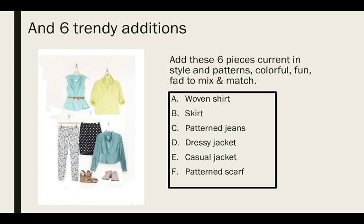Now, there's six trendy additions, and these are currently in style, colors and patterns. They're typically fun. They're a little bit more of a fad piece. You want to use them to mix and match. The eight pieces are classical. These are just what is trendy right now. So a woven shirt, skirt, patterned jeans, dressy jacket, casual jacket, a patterned scarf. So instead of a patterned scarf, maybe you could do like a fun belt. These are going to be what's trendy at the time. You're going to want to use these to mix it up. Skirt for the guys. Obviously, you're not going to wear a skirt. So you just want to do another pair of jeans or shorts, possibly.